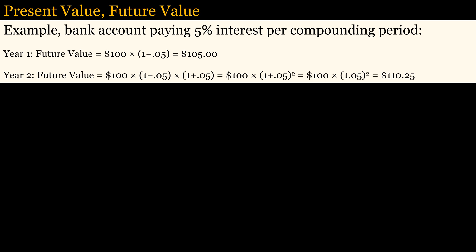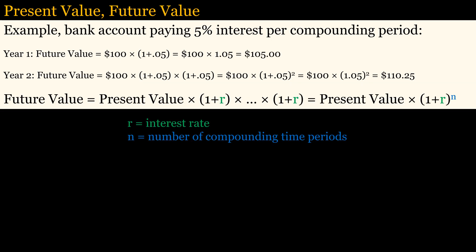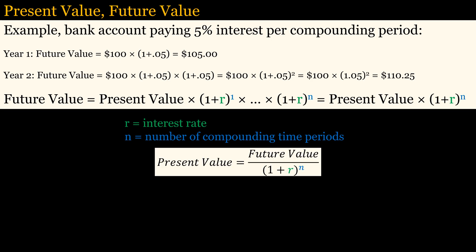To know how bond prices vary with yield, you must first understand the idea of present value and future value. If I deposit $100 in a bank account paying 5% interest annually, then at the end of the first year I will have $105. At the end of the second year, I will earn 5% on the $105, so I will have $110.25, thus earning 5% compounded annually. This is the generalized equation for calculating future value. From that equation, it is easy to calculate present value from the future value — just divide both sides by the interest rate term.